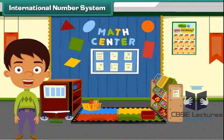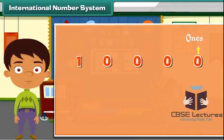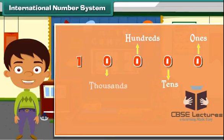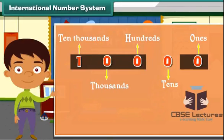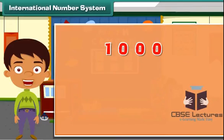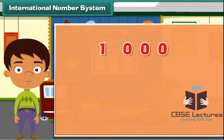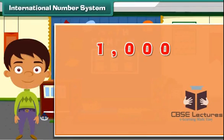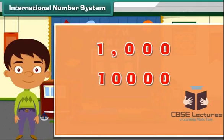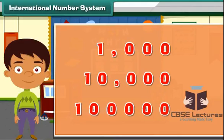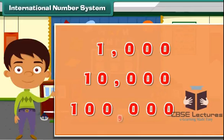The international number system groups the digits into sets of three each, starting from the right. One thousand is written as one comma zero zero zero. Ten thousand is written as ten comma zero zero zero. One hundred thousand is written as one zero zero comma zero zero zero.